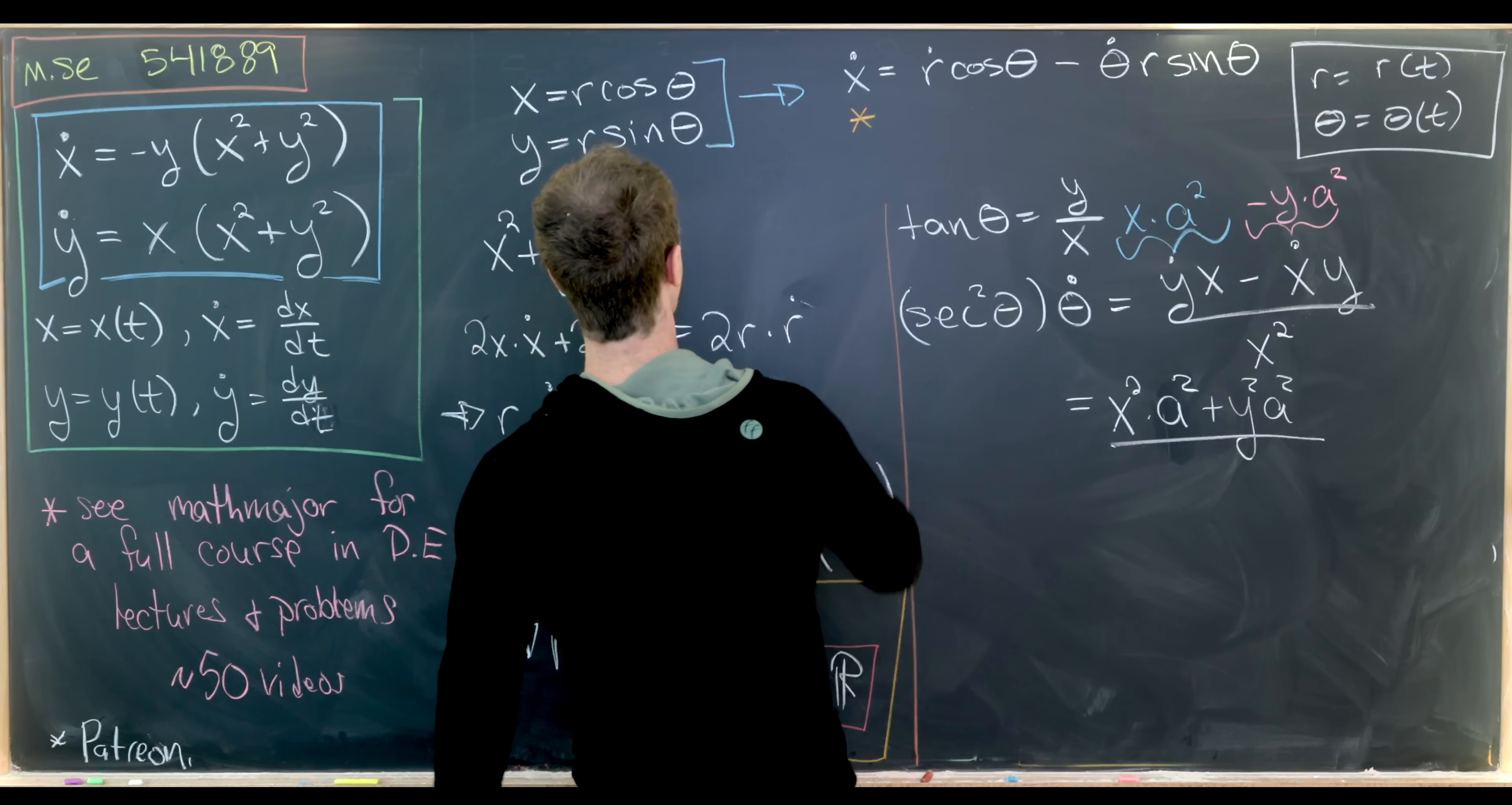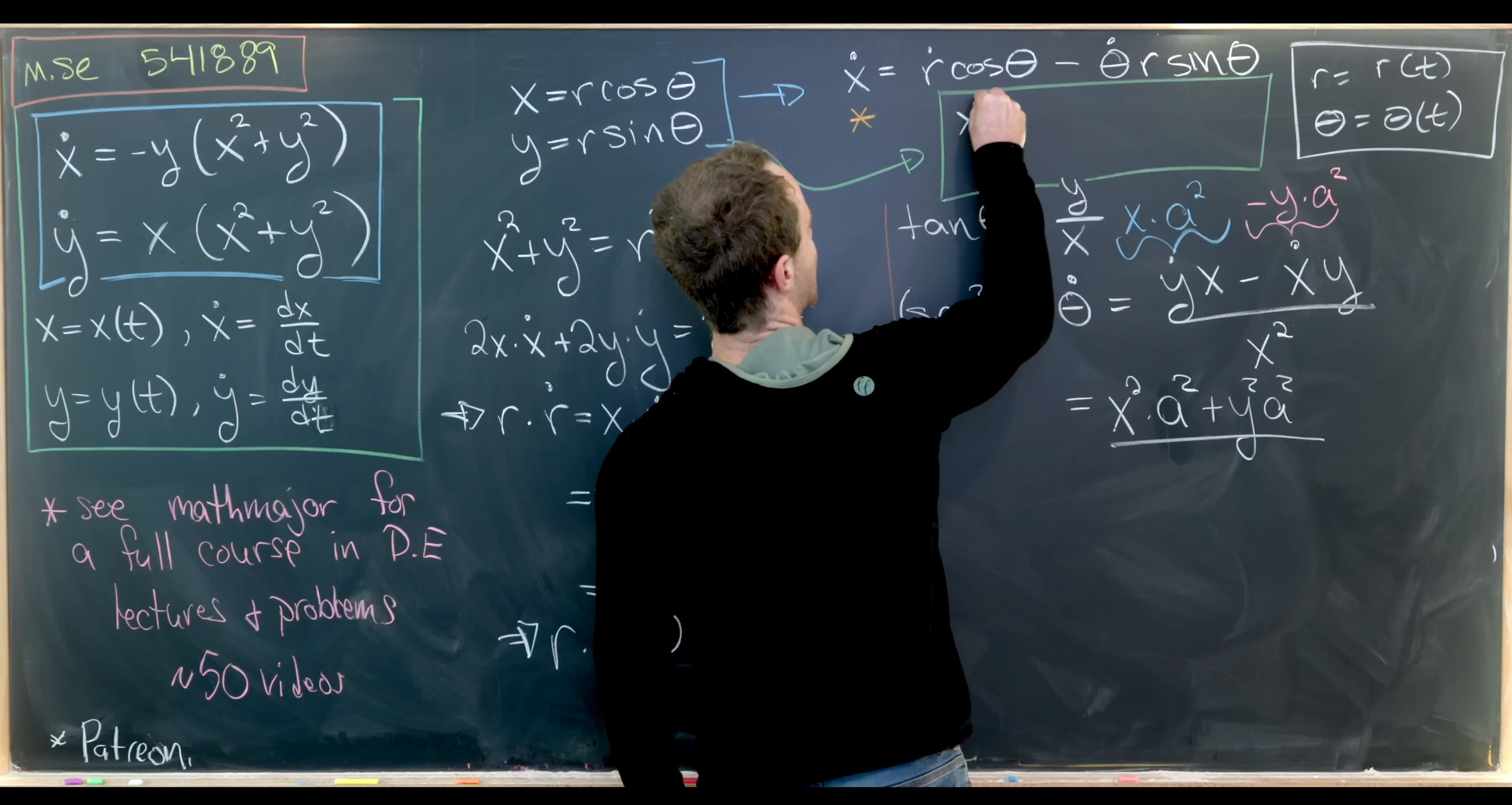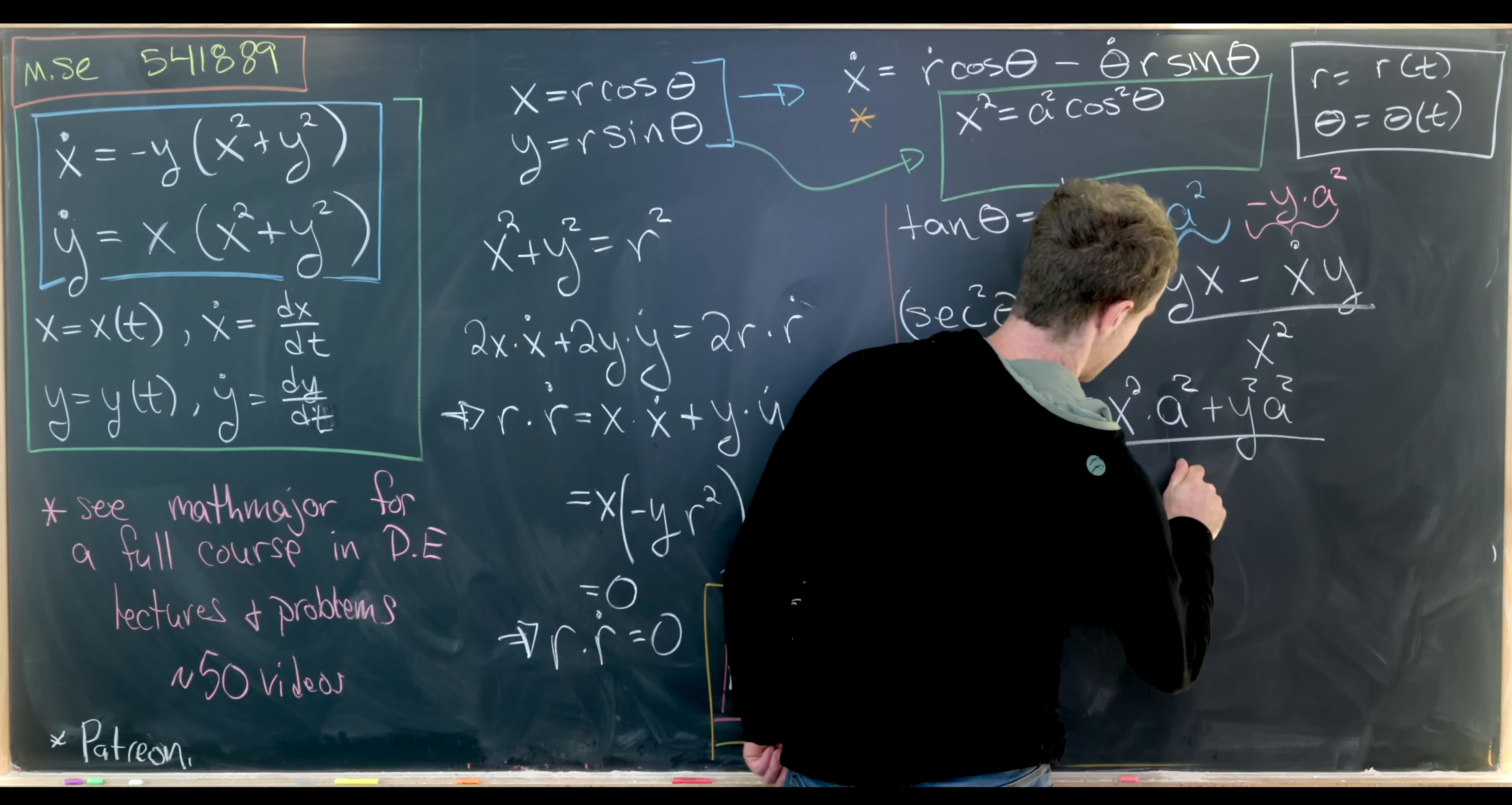And now let's notice that this is all over x squared. But before we put x squared there, let's maybe do a little bit of a calculation which will allow us to maybe streamline this process. Okay, so let's notice that x is r cosine θ. That means x squared is r squared, which is a squared cosine squared θ.